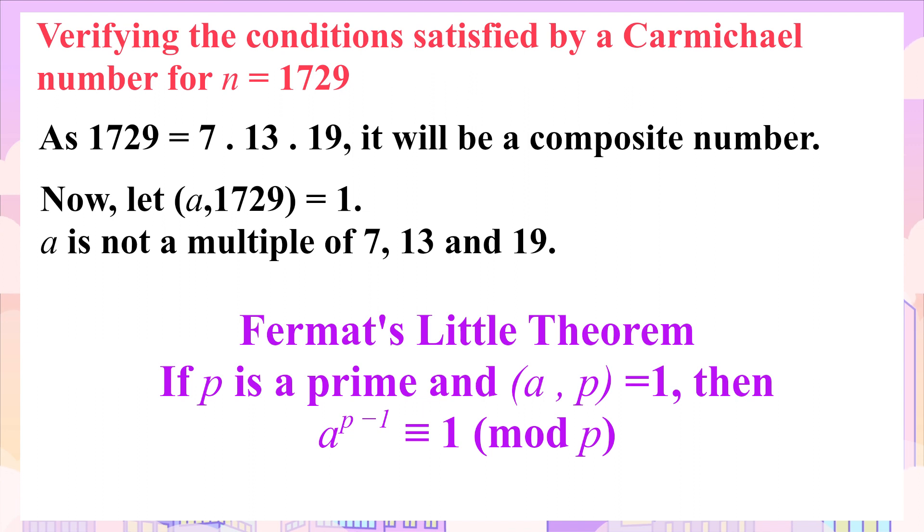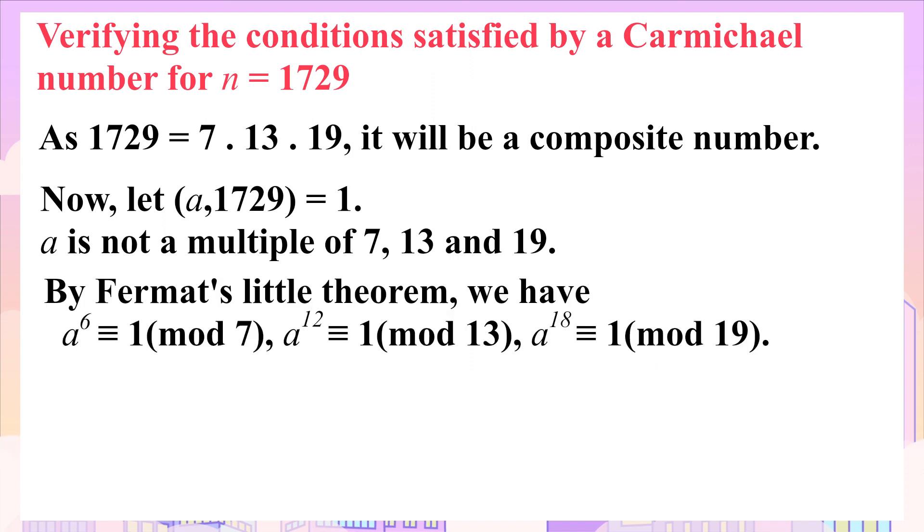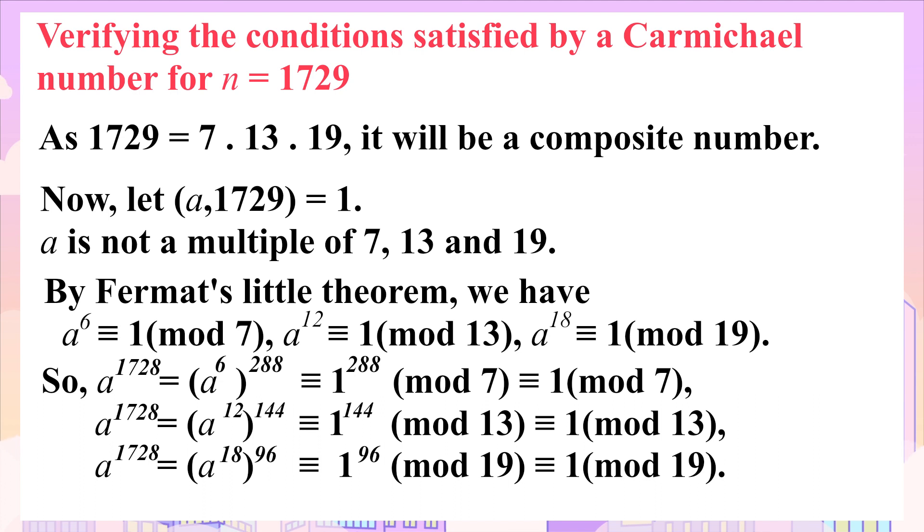Next, we use Fermat's little theorem, which says for a prime number p, such that for any integer a, with GCD of a and p equal to 1, a to the power p minus 1 is congruent to 1 modulo p. As 7, 13, and 19 are prime numbers, we get the following by Fermat's little theorem. Using these results, we write a to the power 1728 equals a to the power 6 times 288 is congruent to 1 modulo 7. Similarly, a to the power 1728 is congruent to 1 modulo 13 and 1 modulo 19.